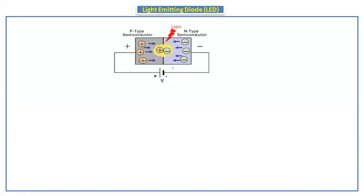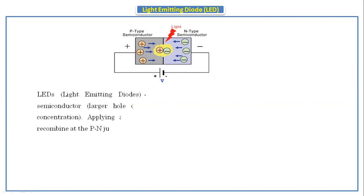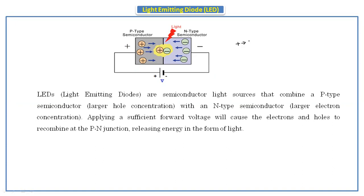Here this is a light emitting diode. If you see the biasing, we are giving the supply positive to the p-type semiconductor and negative to the n-type semiconductor. As positive is connected to p-type and negative to n-type, this is called forward bias of the LED. LEDs are semiconductor light sources that combine a p-type semiconductor with an n-type semiconductor with a large electron concentration, but in the p-type a larger hole concentration. Applying a sufficient forward voltage will cause the electrons and holes to recombine at the junction, releasing energy in the form of light.